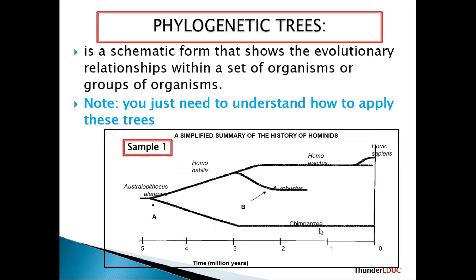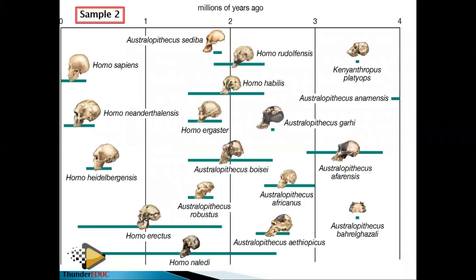Australopithecus afarensis gave rise to Homo habilis and also to chimps. Homo habilis gave rise to Australopithecus robustus, and also gave rise to Homo erectus — the upright walking man. Homo erectus then gave rise to Homo sapiens. The common ancestor of all these species is Australopithecus afarensis.